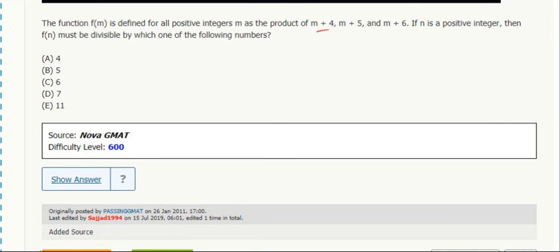This function f(n) is n plus 4 times n plus 5 times n plus 6. That's really three consecutive integers there. So this is just a sneaky way of saying we have three consecutive integers multiplied together.